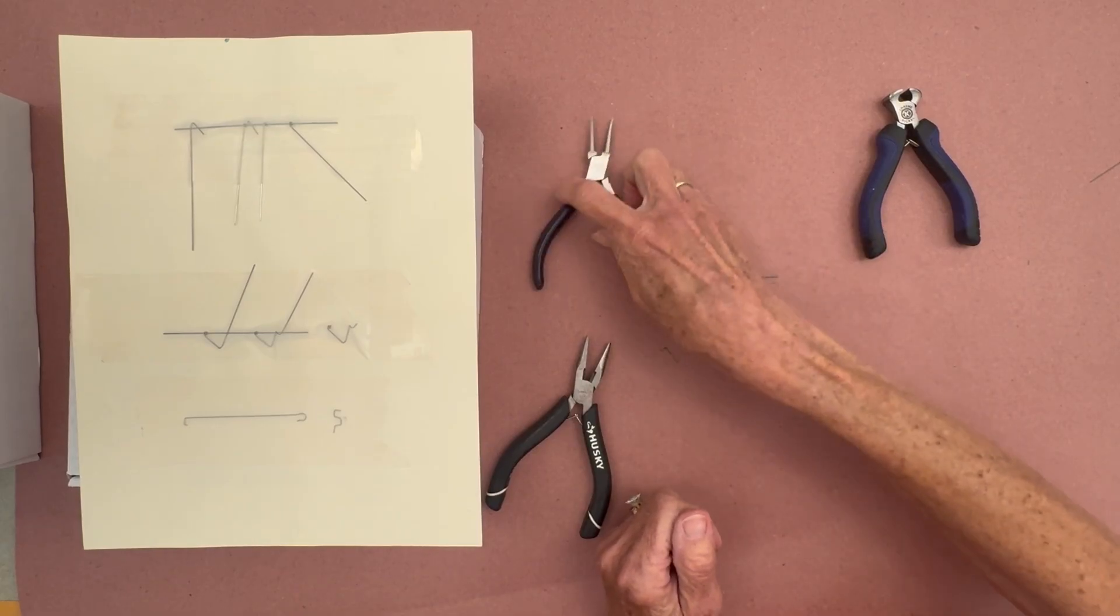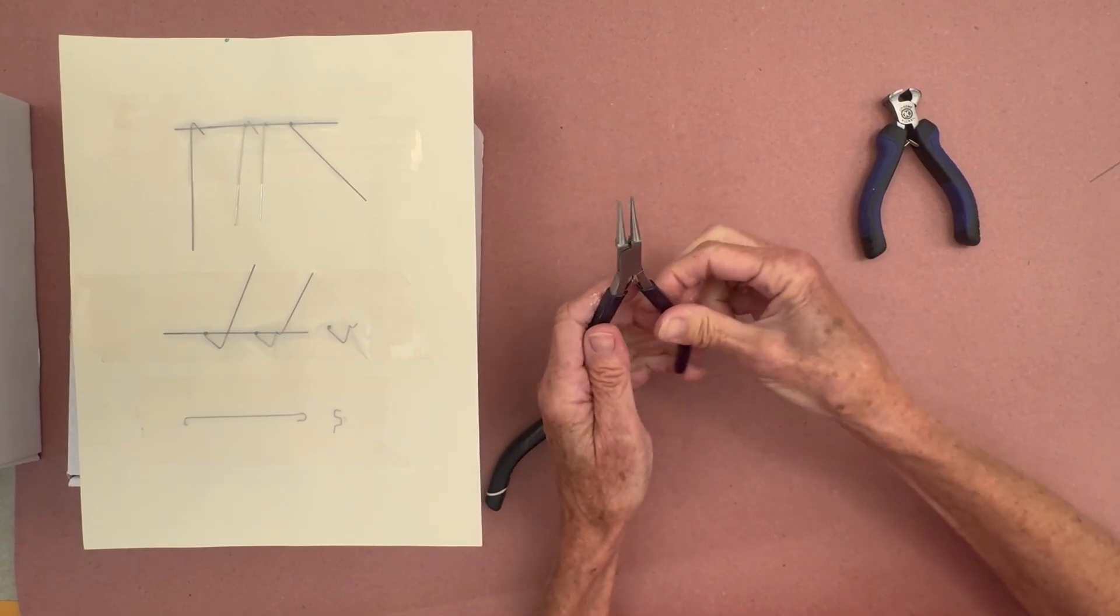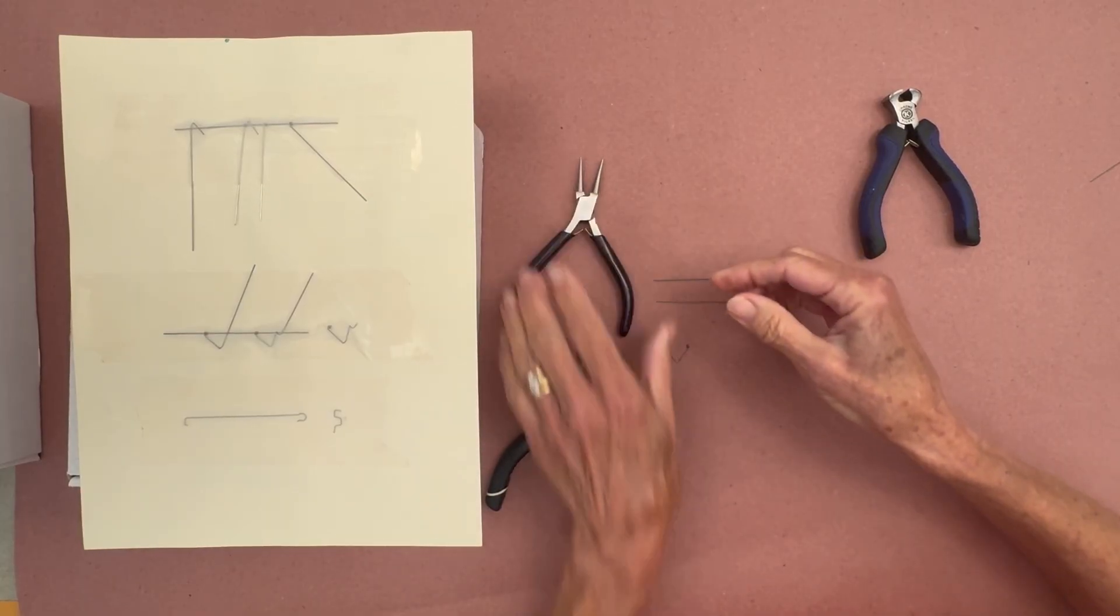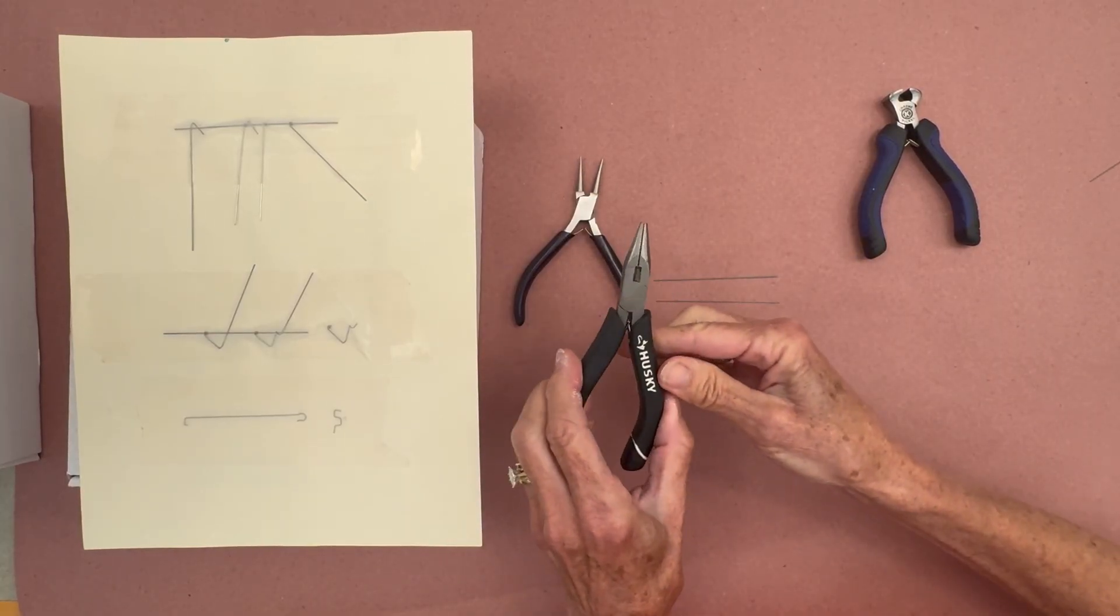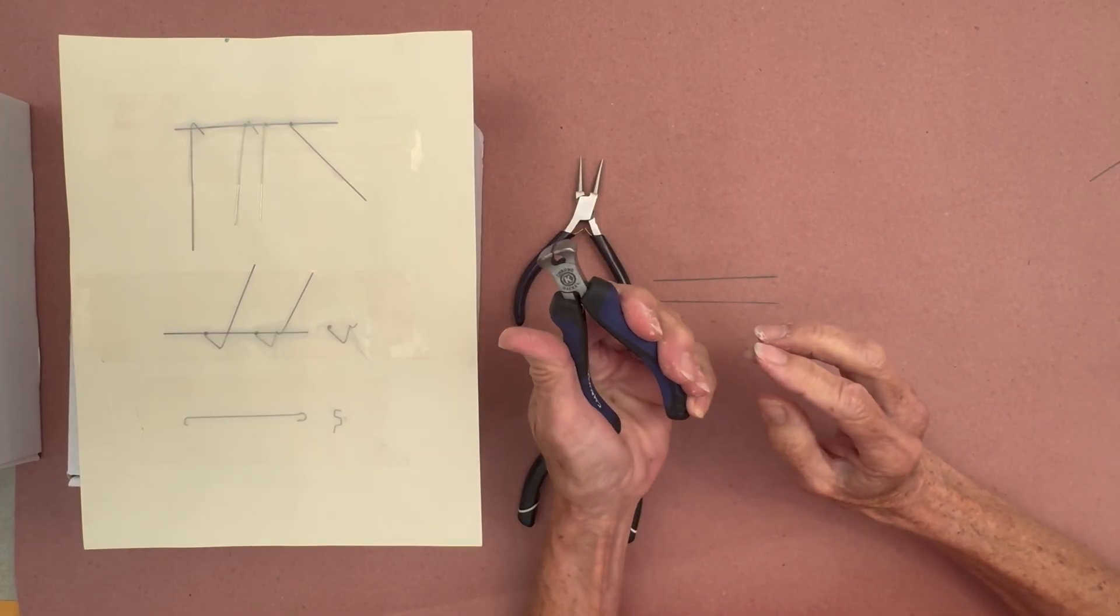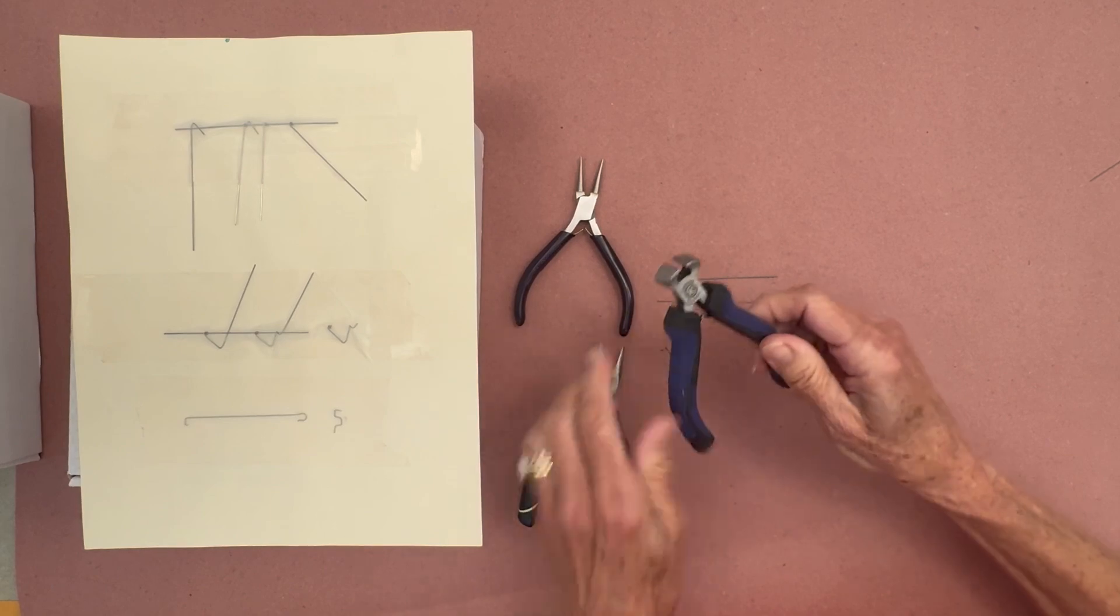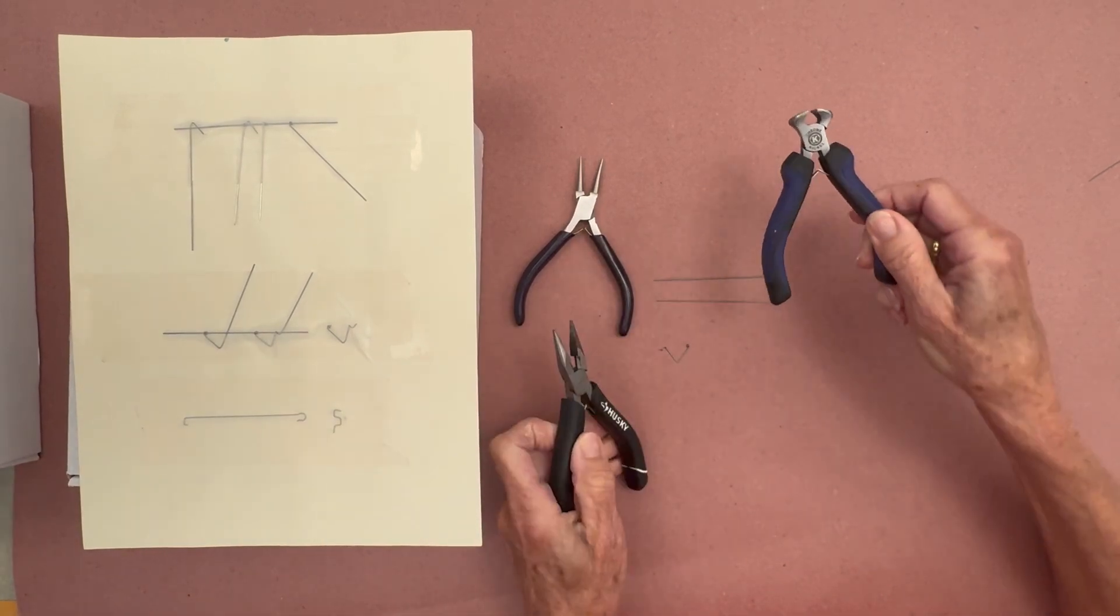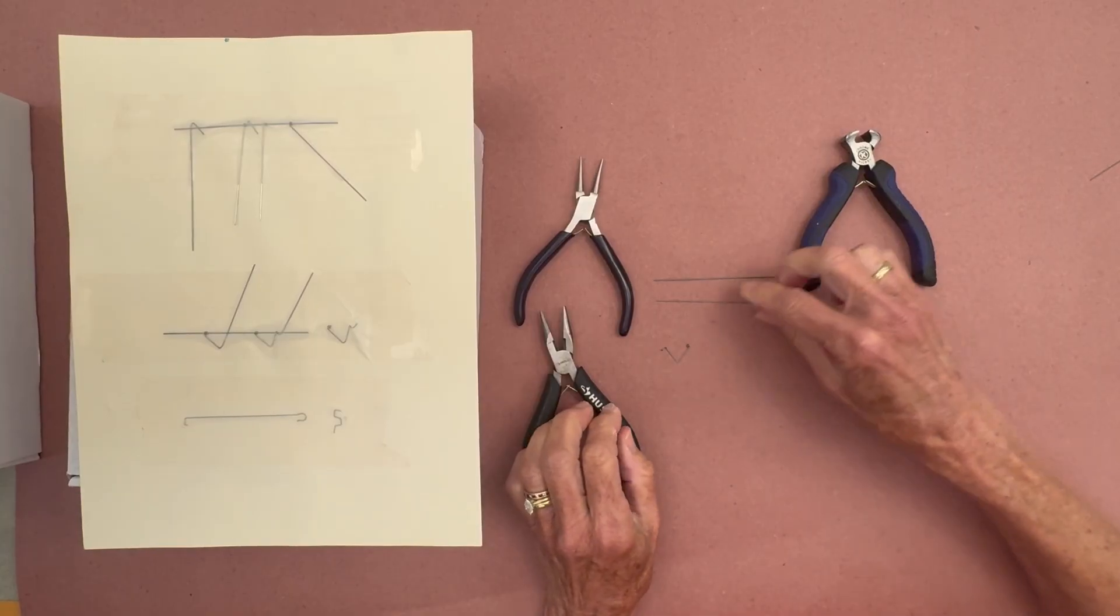What you're going to need is a set of pliers that are the rounded ones like this and regular pliers. And then I like to use these clipping ones. These you can get much closer when you clip instead of using the wire cutter that's on the pliers. We're going to get started.